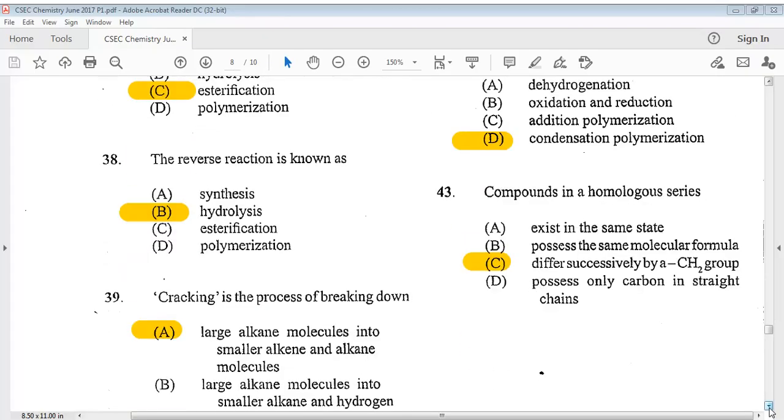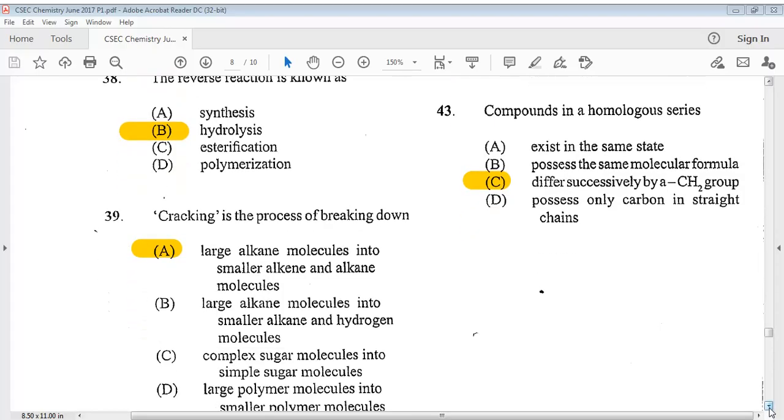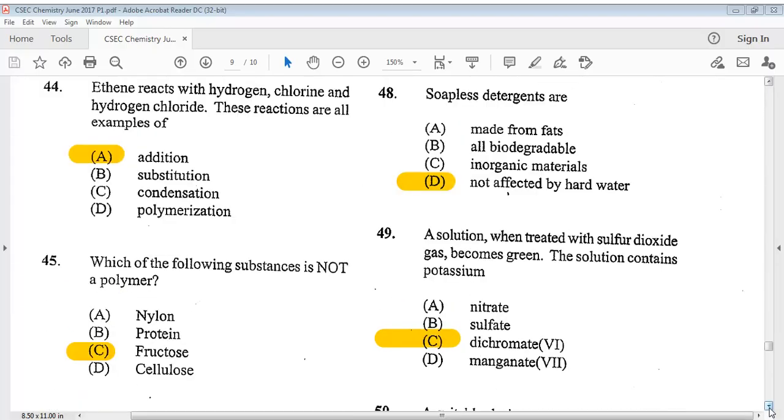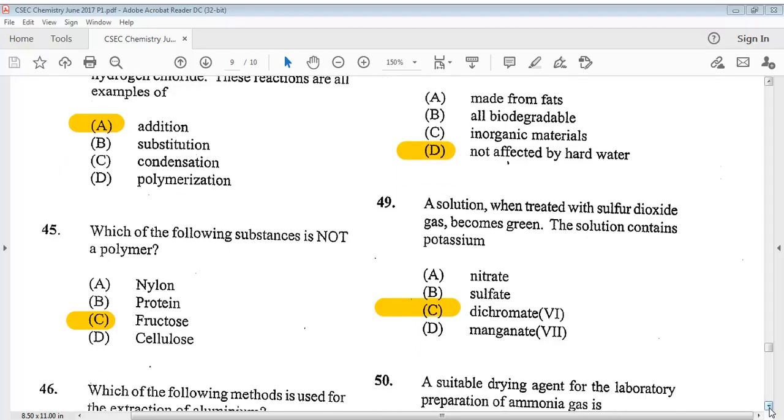Question 43. Compounds in a homologous series? The answer is C, differs successively by a CH2 group. Question 44. Ethene reacts with hydrogen, chlorine, and hydrogen chloride. These reactions are all examples of? The answer is A, addition. Question 45. Which of the following substances is not a polymer? The answer is C, fructose.